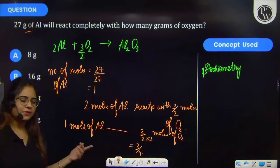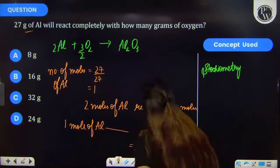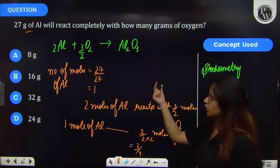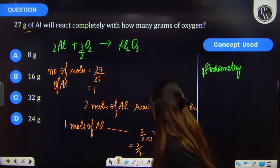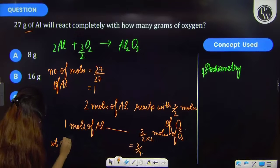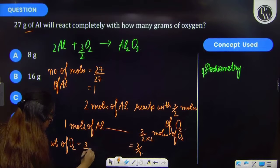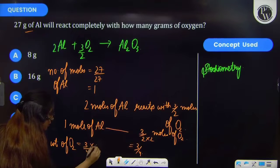But we have asked for the weight. So this is the mole. On multiplying the moles with the molecular weight, I will be getting the weight of oxygen that will be reacting. So weight of oxygen will be 3/4 into 32.